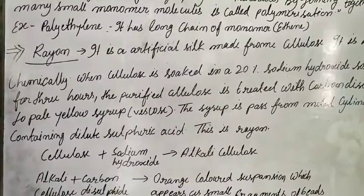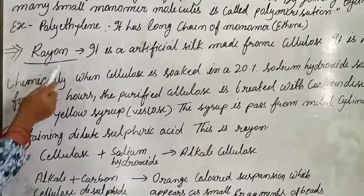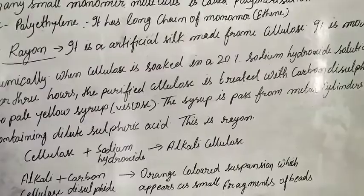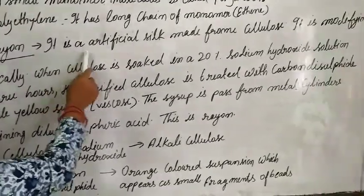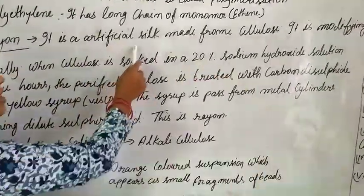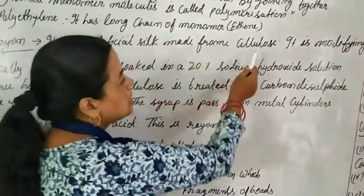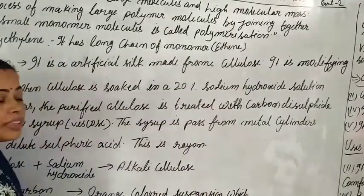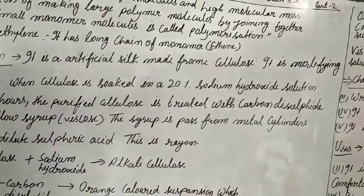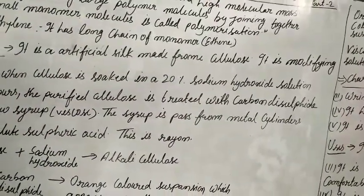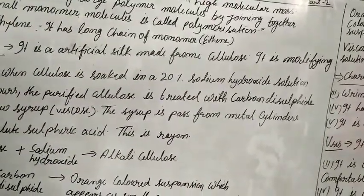The next one is Rayon. This is also a type of synthetic fiber. It is an artificial silk made from cellulose. This cellulose is obtained from tree pulp.